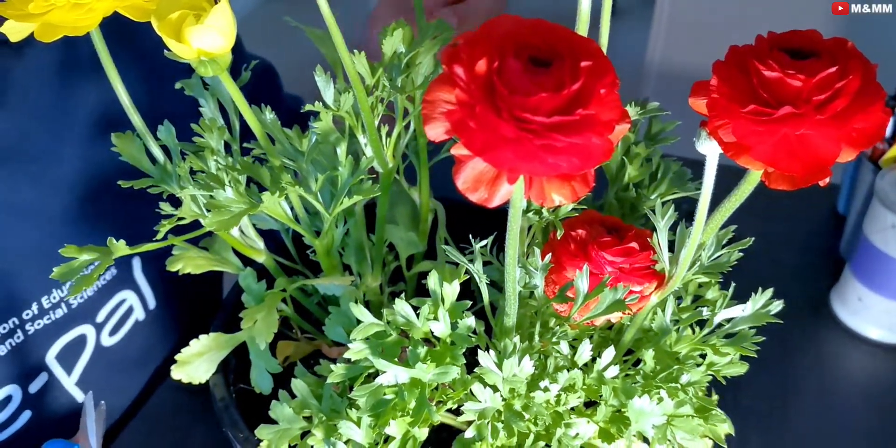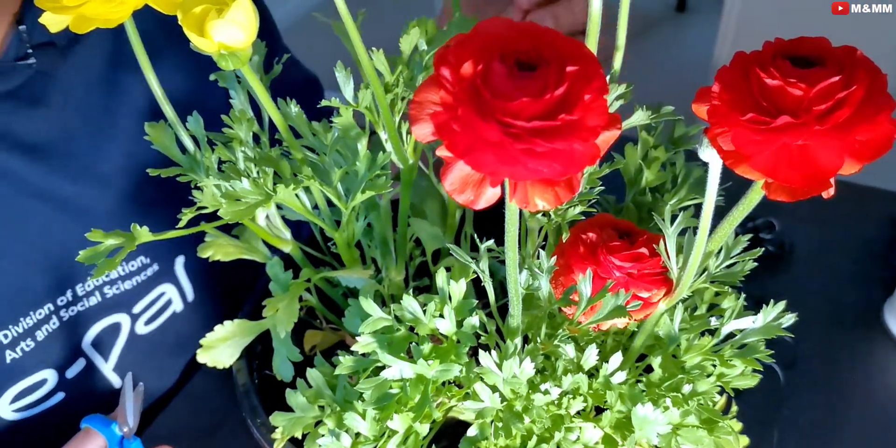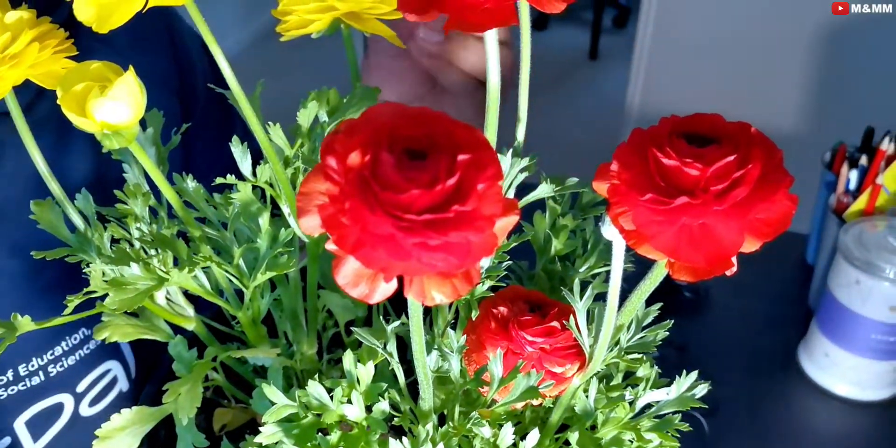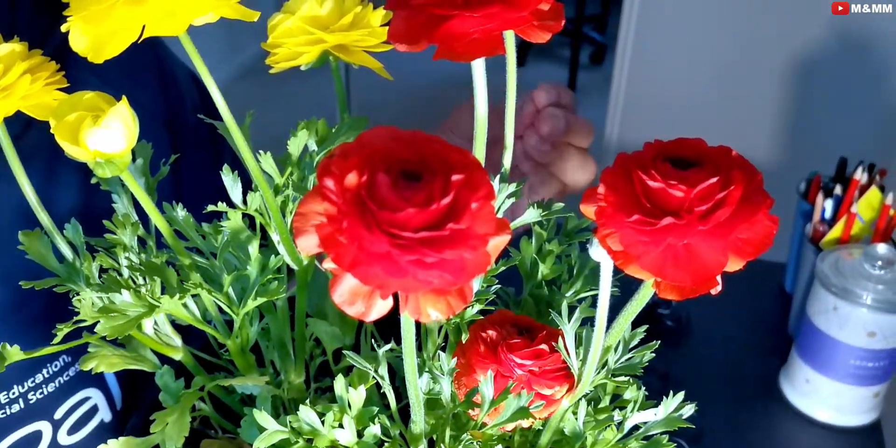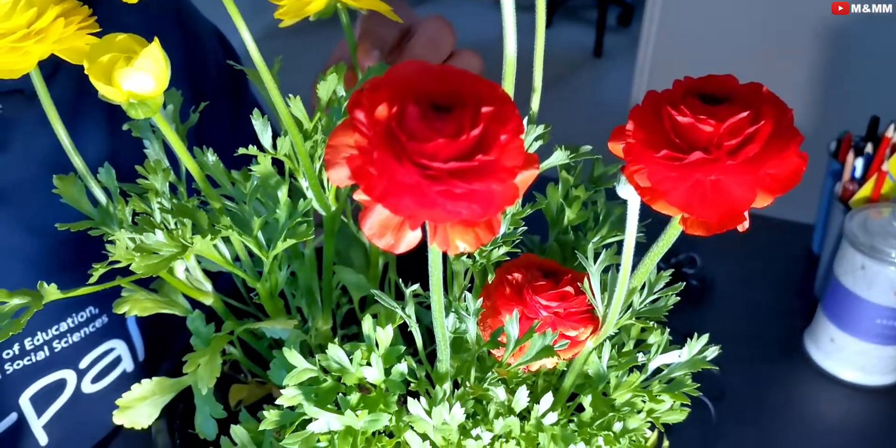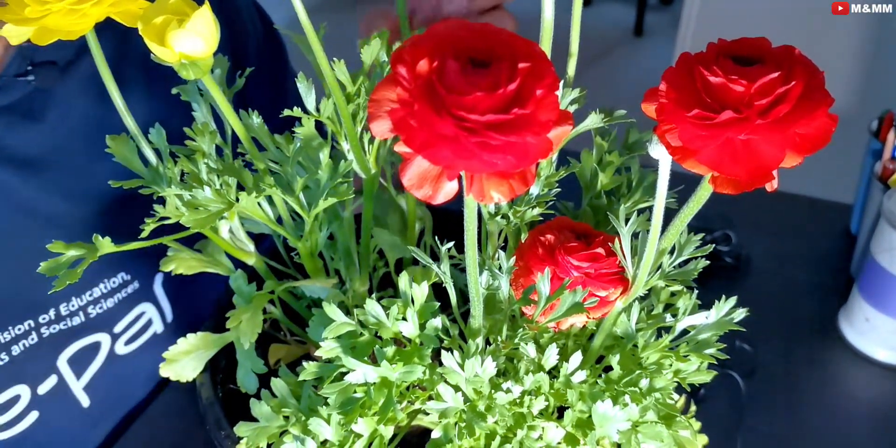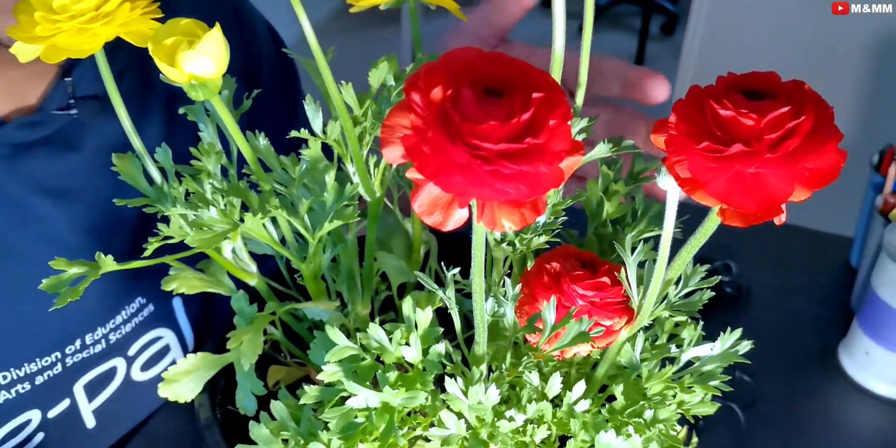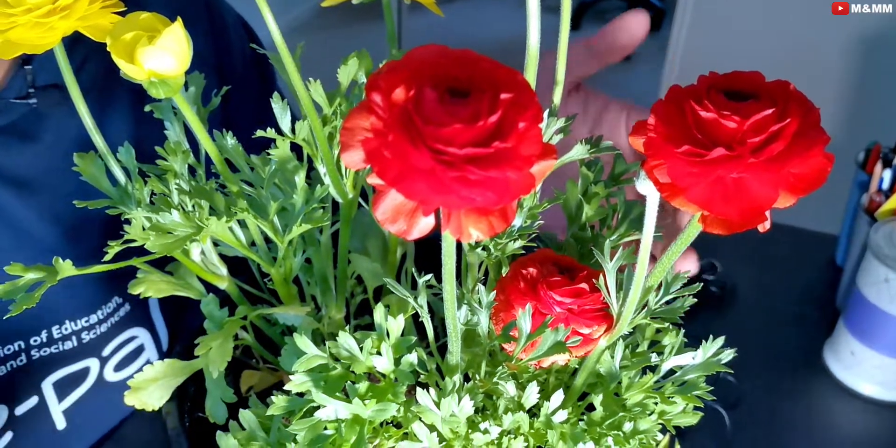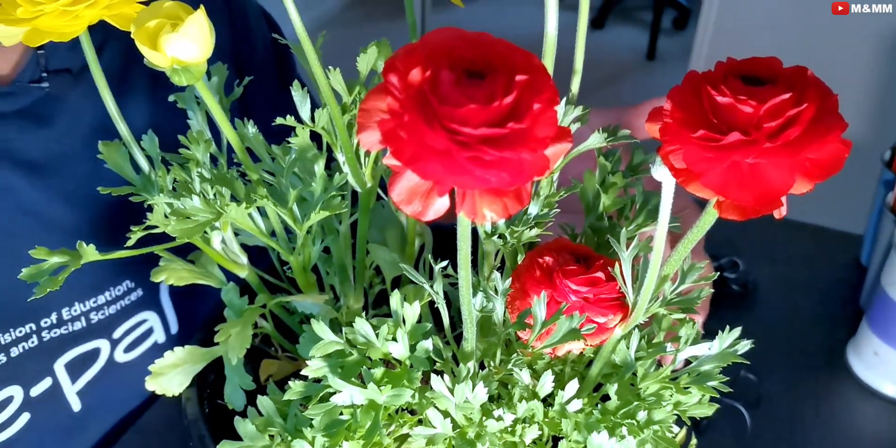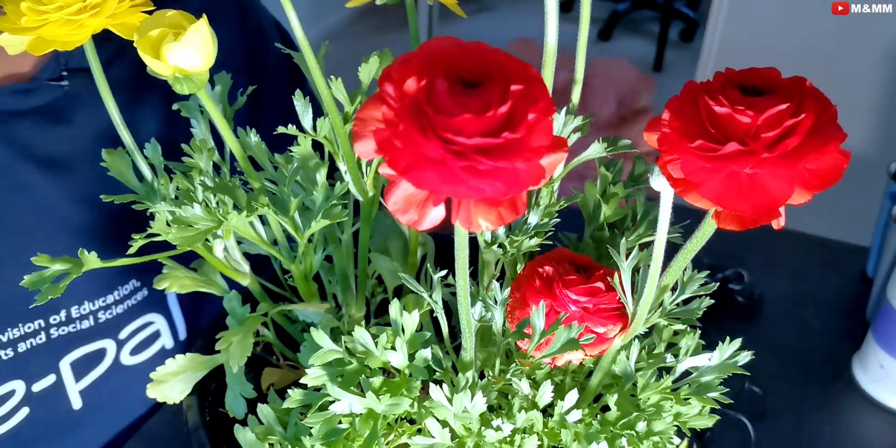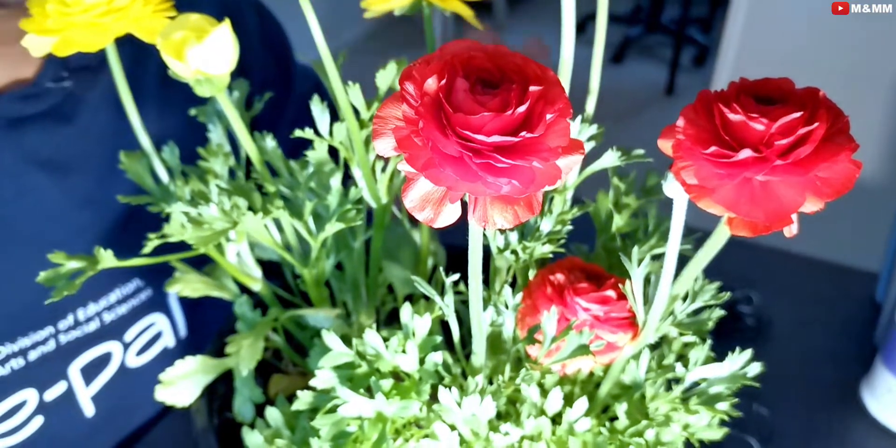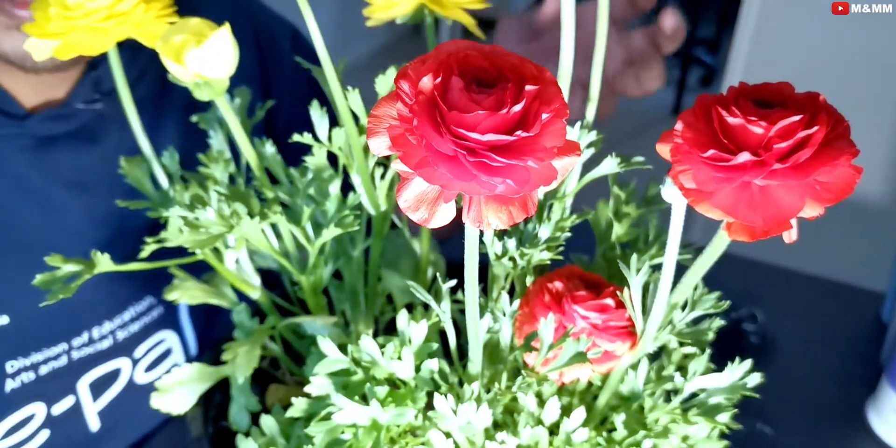The next tip about deadheading is why we need to get rid of old flowers. When you cut flowers which have completed their life, it stops seed formation. Why does a flower grow? Because when the flower ends, the next step is seed formation. If you let the plant form seeds, it gets an indication that life is almost done. If you cut old flowers, the plant instead of wasting energy on seeds will invest energy in forming new buds and flowers.